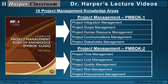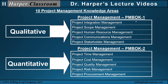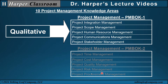The PMBOK Guide contains 10 project management knowledge areas that I've divided into two groups: PMBOK 1 and PMBOK 2. PMBOK 1 represents the qualitative approach, or the soft sciences, within project management. PMBOK 2 includes the quantitative or analytic approach. In this video, I will cover the qualitative PMBOK 1 — these five knowledge areas.